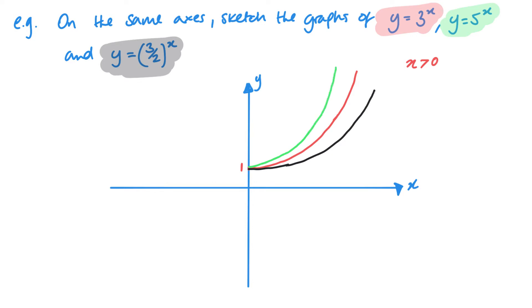It's important to recognize that 3 to the power 8 is not as big as 5 to the power 8. Equally, 3 to the power 8 is bigger than 3/2 to the power 8, just picking a random value of x.